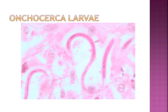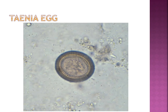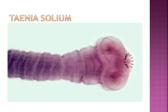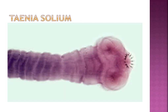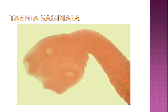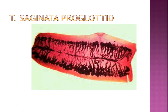The Taenia egg has a hexacanth embryo — three pairs of hooklets — and radiostriations. The cysticercus larva is also known as the bladder worm. T. solium has a rostellum with a double crown of hooks. T. saginatus has suckers. The lateral branches of the proglottid: saginatus has 15–30, solium has 7–15. Saginatus comes from beef, solium from pork. Brain infections are common.